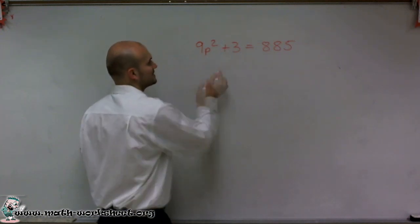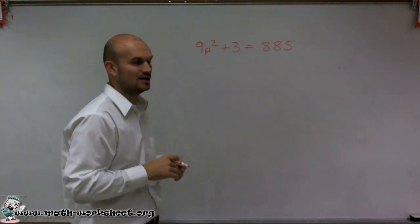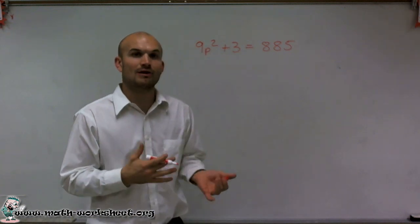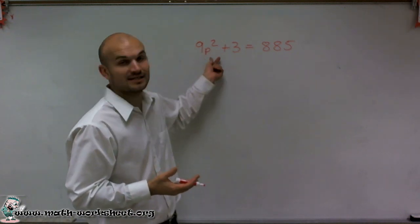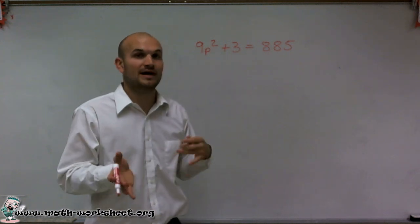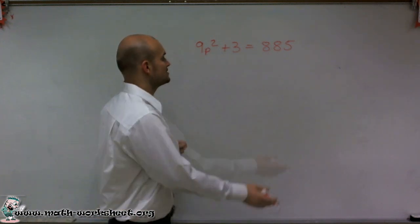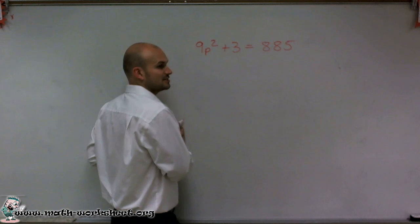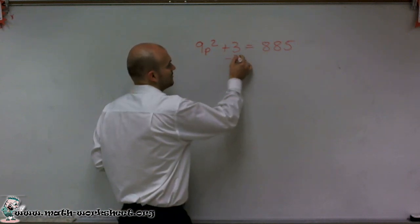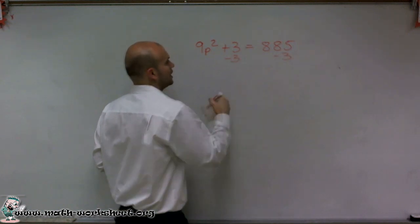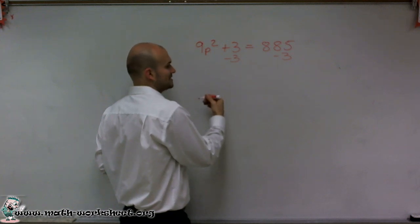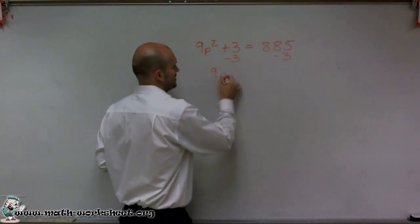So first of all, I need to get rid of this 3, this 9, and this 2 over here. I'm going to look at their operation that they're affecting my p with, and I'm going to undo them by the reverse order of operations. The first thing I always undo is addition and subtraction. So I'm going to undo adding 3 by subtracting on both sides, which is subtraction property of equality.